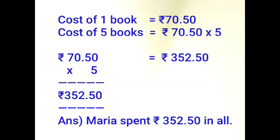Cost of 5 books is equal to rupees 70.50 into 5. Do the multiplication on the left hand side of the page: 70.50 into 5 — 5 zeros are 0, 5 fives are 25, 5 twos are 10 plus 2 is 12, 5 sevens are 35. Put the point before 2 digits as given in the question — so in the answer also, point before 2 digits. Our answer is rupees 352.50.